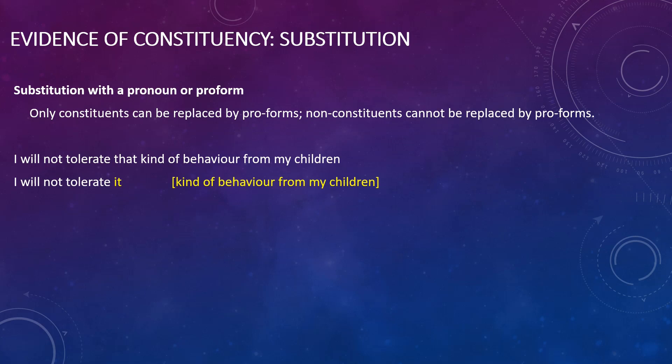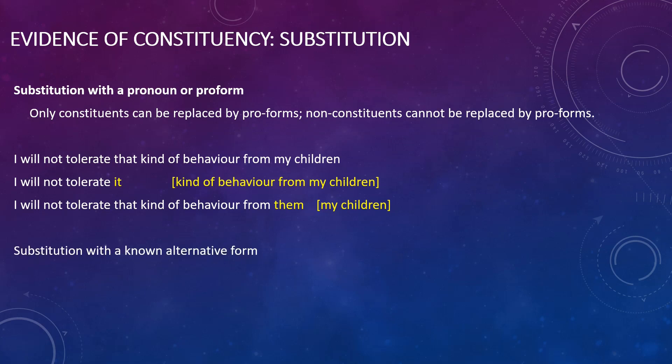You could paraphrase the sentence by saying 'I will not tolerate that kind of behavior from them' — where 'them' refers to 'my children,' another noun phrase. You could also substitute with a known alternative form. If you're not sure whether 'from my children' is a noun phrase or prepositional phrase, but you know that 'at the wedding' is indeed a prepositional phrase, you can try swapping the phrase you know with the one you don't.